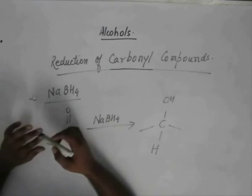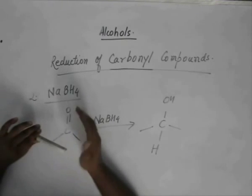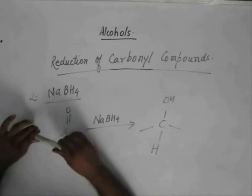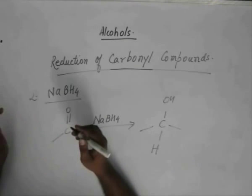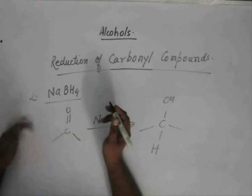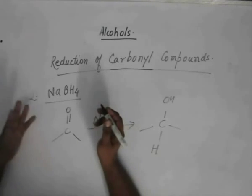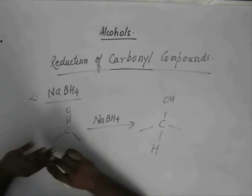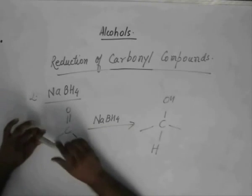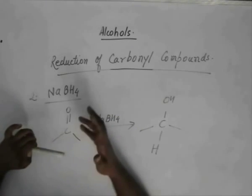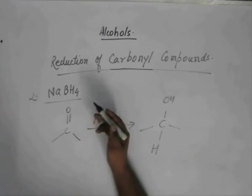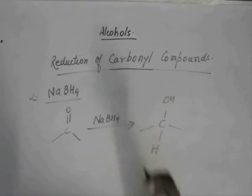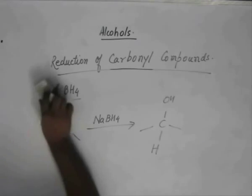In the case of lithium aluminum hydride, it also cannot reduce double bonds. But when the double bonds are in conjugation with the carbonyl group, it can reduce them. Not in the case of NaBH4. I will deal with some specific examples that will show the exact procedure how NaBH4 and lithium aluminum hydride actually work.